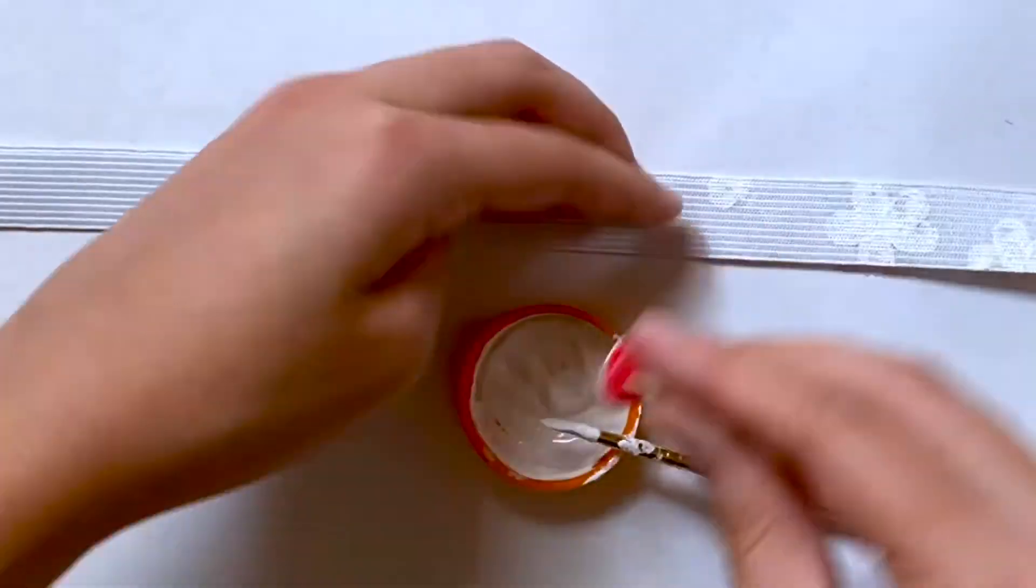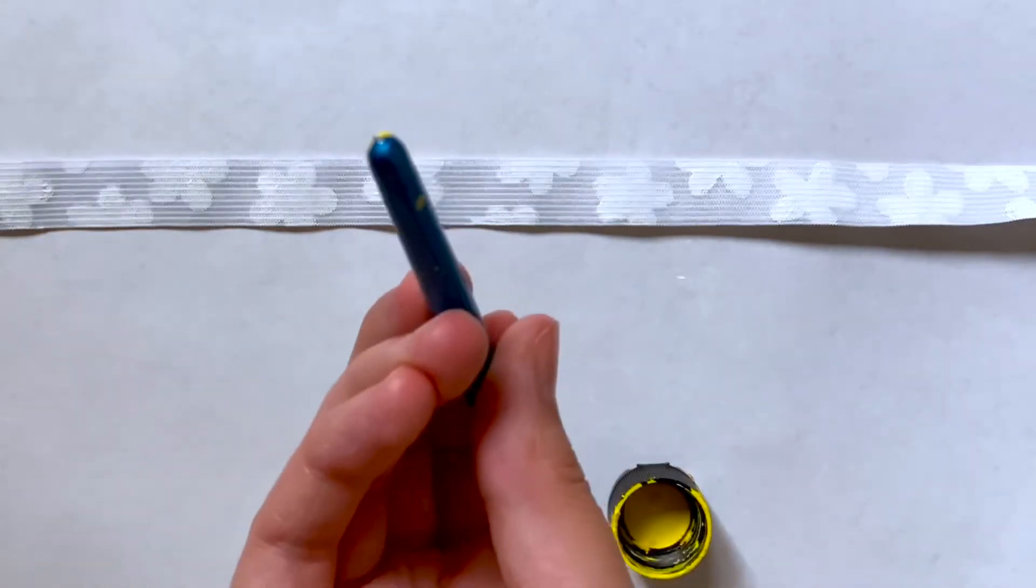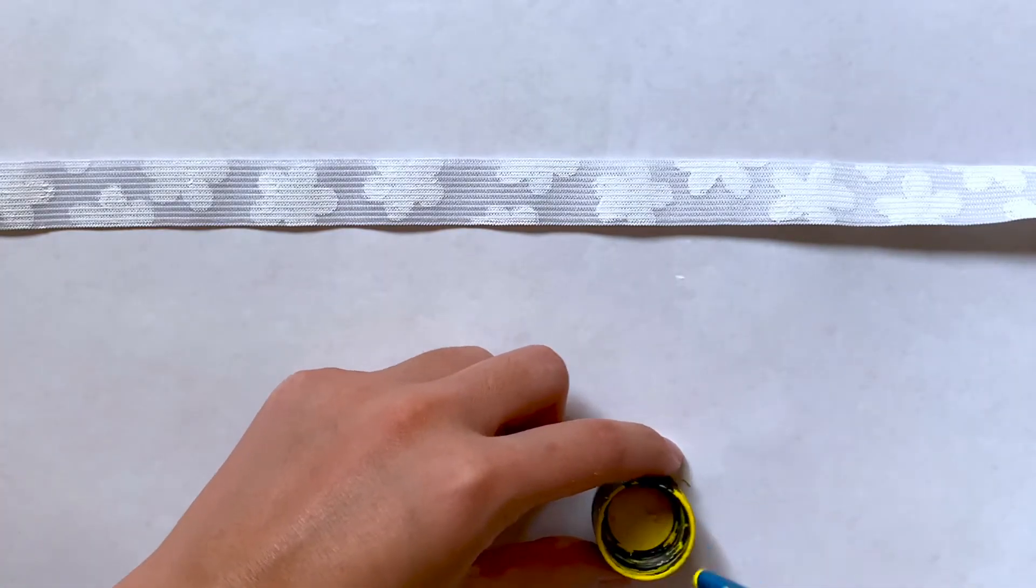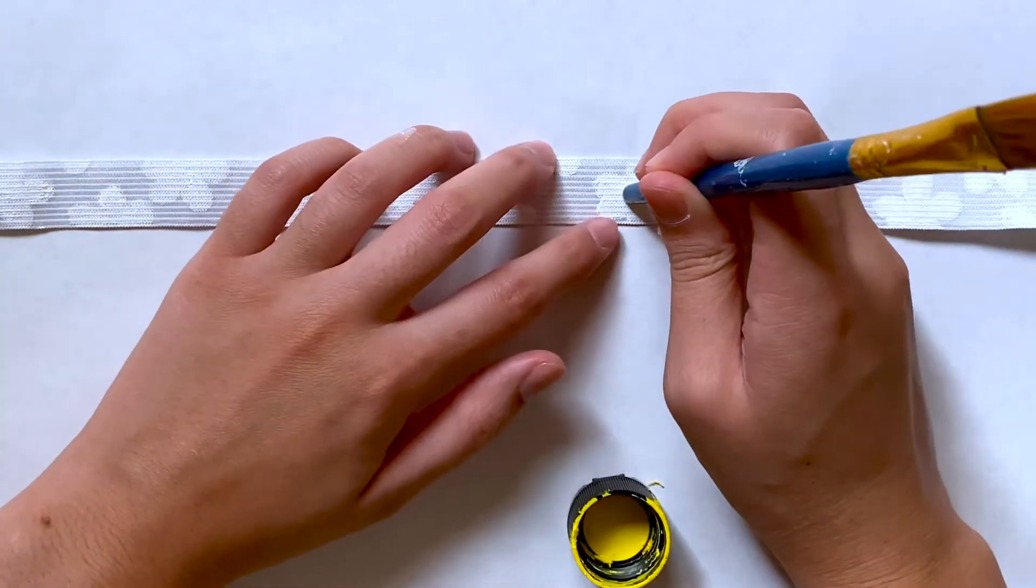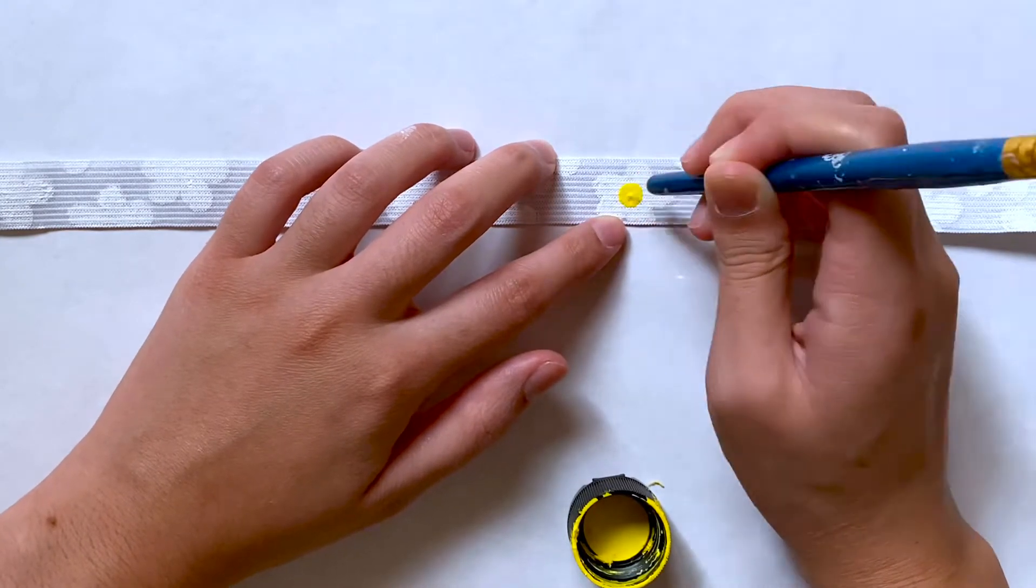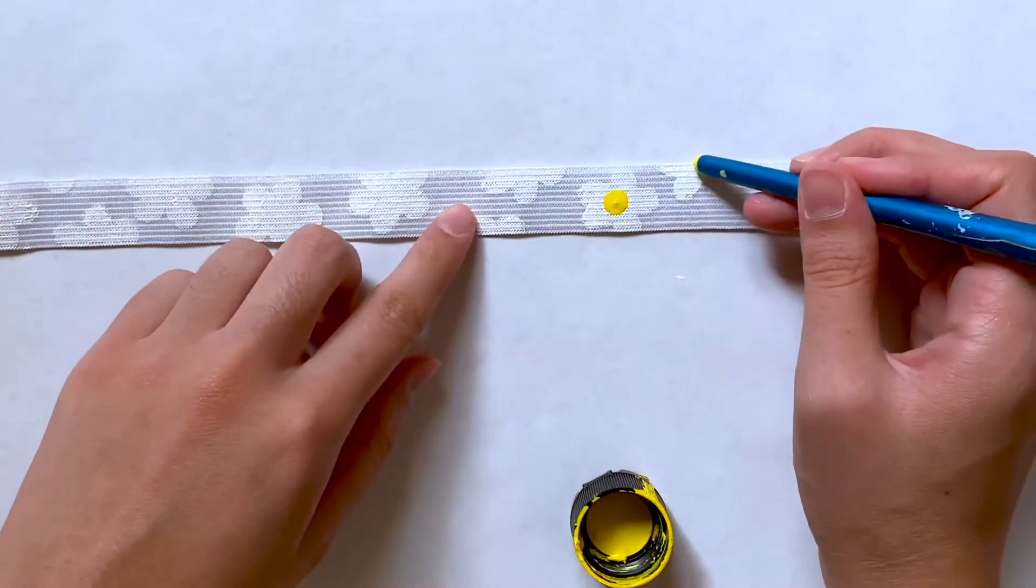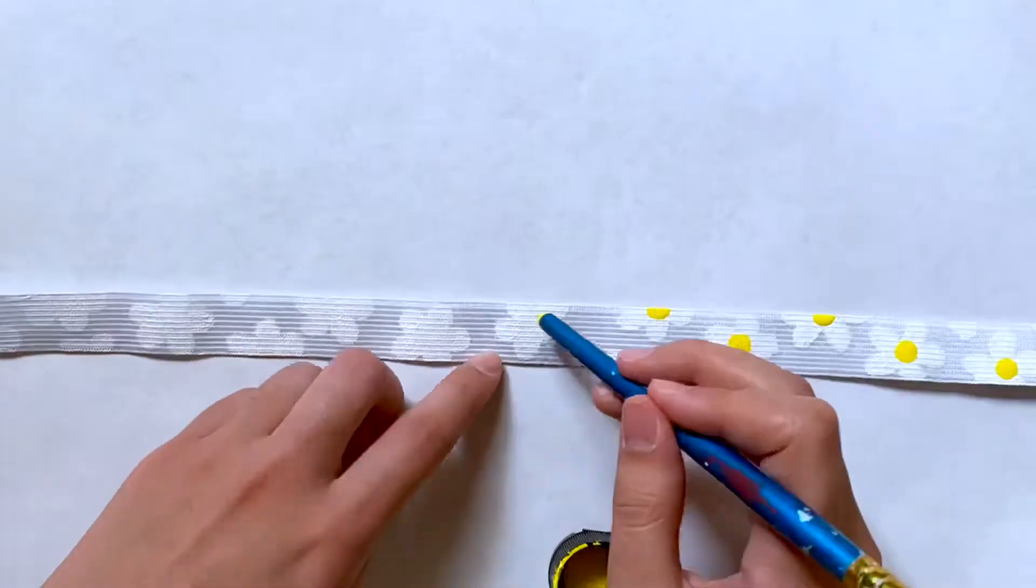Of course, painting the elastic is totally optional. After all the flowers are dry, I'm going to go in with the end of a paintbrush to make the center of the daisies. So I'm dipping this in yellow fabric paint and just adding a yellow dot to the center of each one. After that dries, we can move on to our next step.